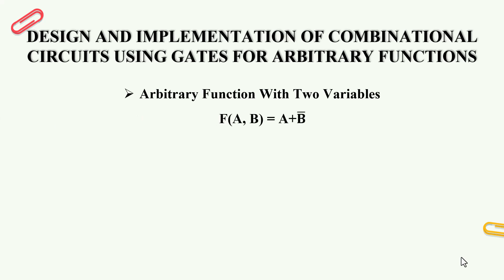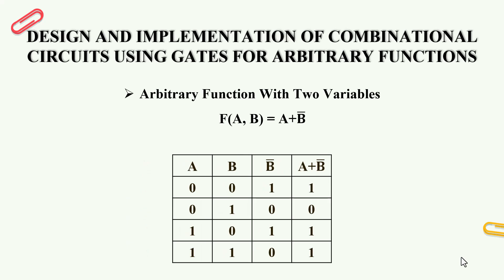First, we have an arbitrary function with two variables. We are going to design using K-map and combinational circuits. Our function f(A, B) = A + B̄. We have a truth table with A and B values. For A+B̄: 0+1=1, 0+0=0, 1+1=1, 1+0=1. So the output is going to be 1.